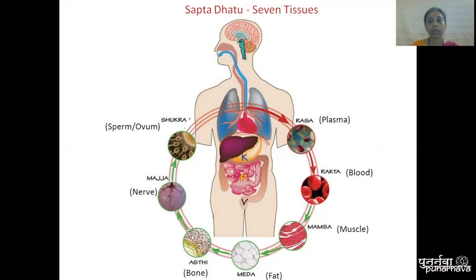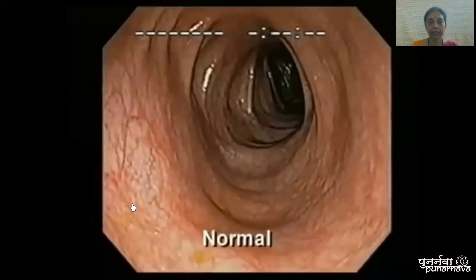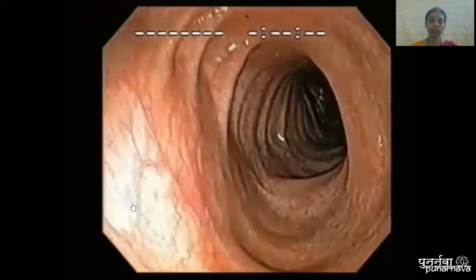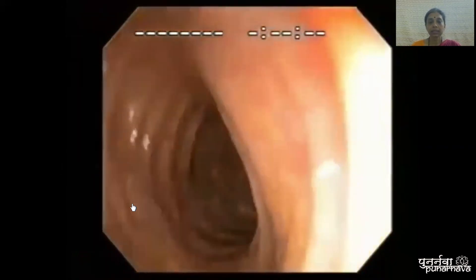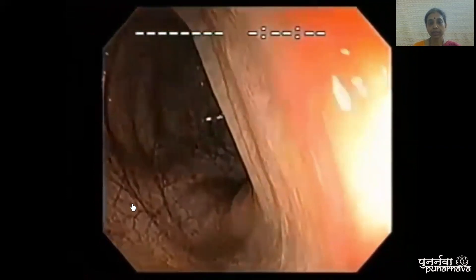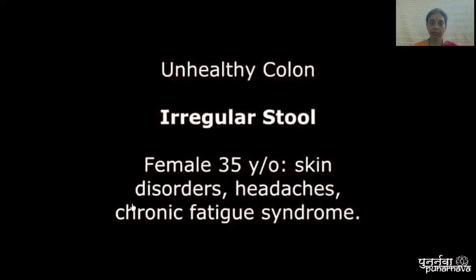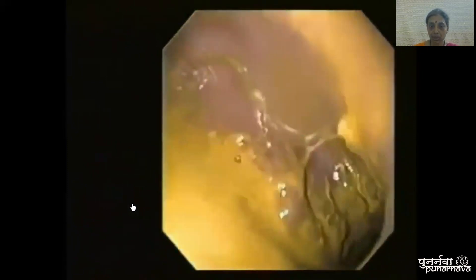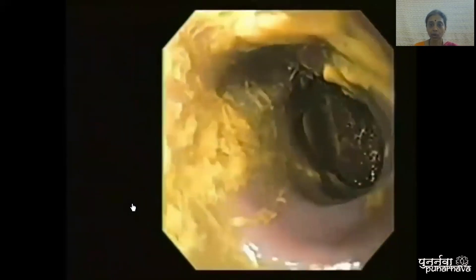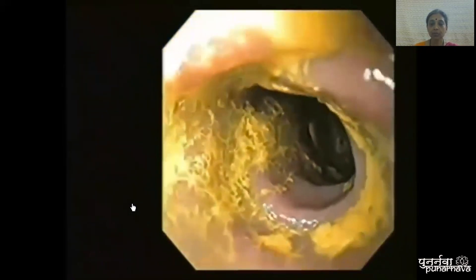This is what happens when our digestion is good — each of the seven tissues are formed sequentially. But what if the digestion is faulty? This is a colonoscopic image. Here you can see a healthy individual and the healthy mucosa lining of the colon. This next image is a patient with headache and chronic fatigue syndrome. You can see the sticky substance lining the mucosal lining. This is Aam — the toxins produced because of poor digestion.